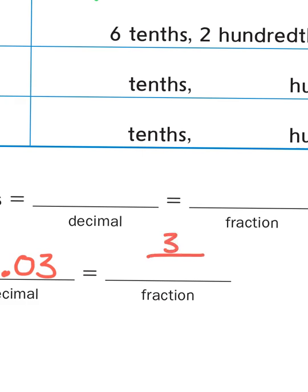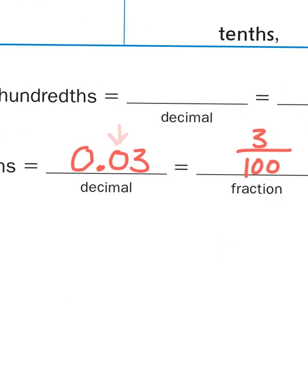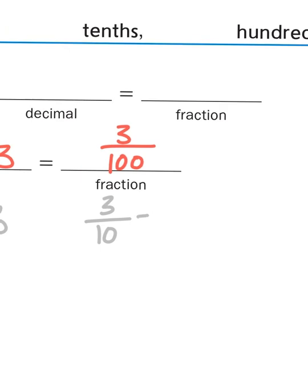When I write it as a fraction, I don't have to include the zero in front of the three. I just have to remember to write 100 underneath it. But as a decimal, that zero in between is what determines that this is hundredths and not 3 tenths. 3 tenths would be 0.3 and be represented as a fraction like this, 3 over 10, which is equivalent of 30 hundredths.